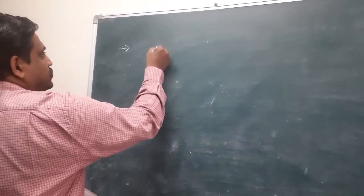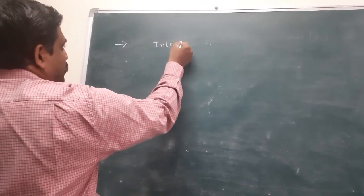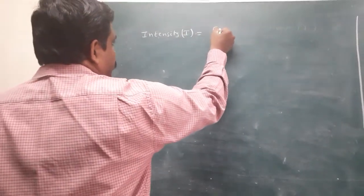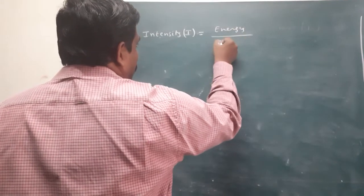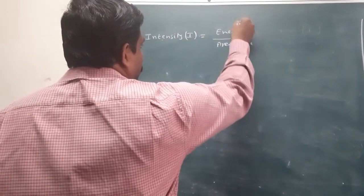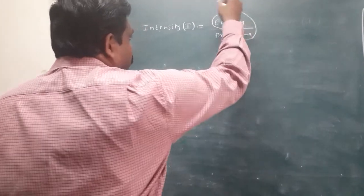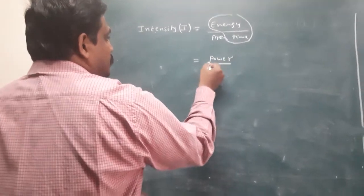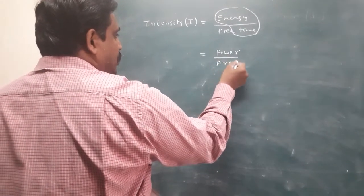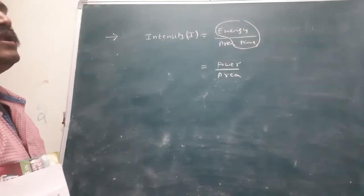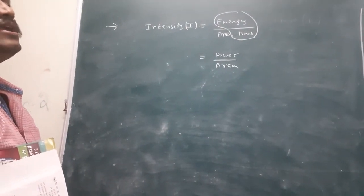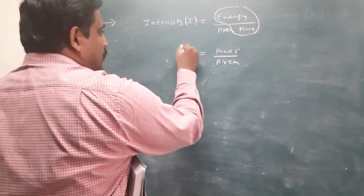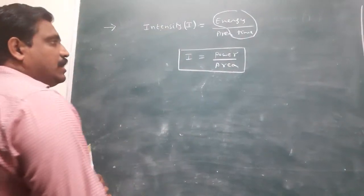Intensity definition: I equals energy flowing per unit area per unit time. Energy divided by time is called power, so intensity has another definition as power by area.